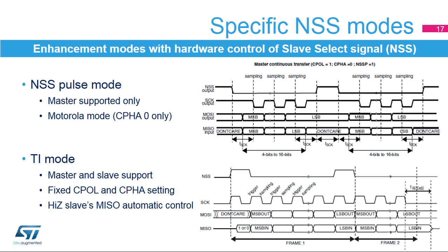There are a few enhanced modes when the slave select signal is under specific hardware control. The slave select signal can operate in a pulse mode where the master generates pulses on NSS output signals between data frames for a duration of one SPI clock period when there is a continuous transfer of data. The data is then interleaved by two SPI clock periods. The clock phase is fixed in this mode. Another enhanced mode is the TI mode where the data flow is synchronized by the NSS pulses provided by the master on the last bit of data. The clock polarity and phase configuration is fixed and the slave data output is automatically switched into high impedance when the bus traffic stops and on a specific configurable timeout.